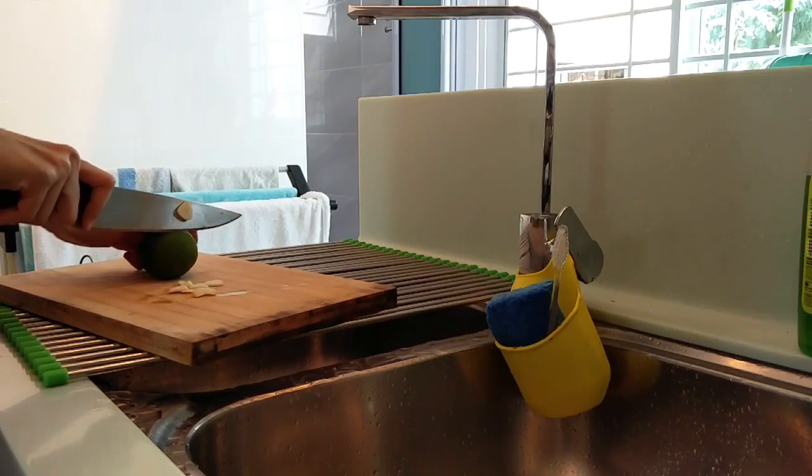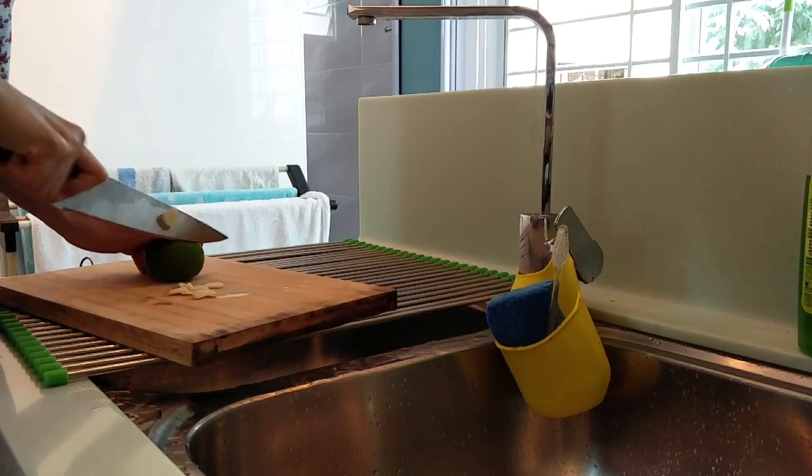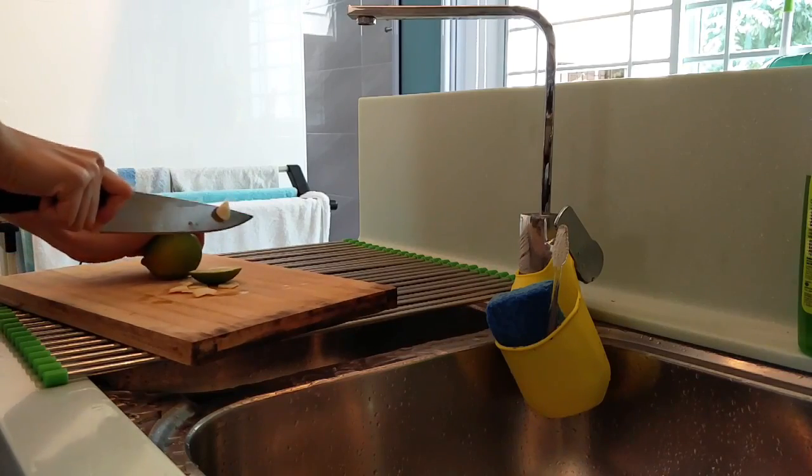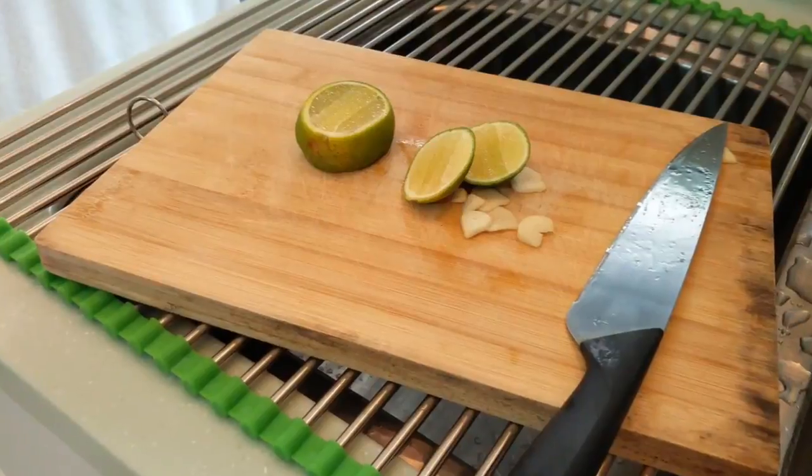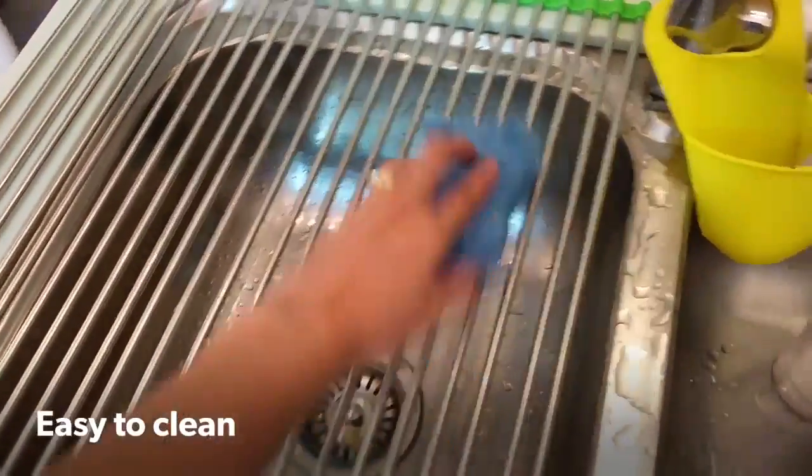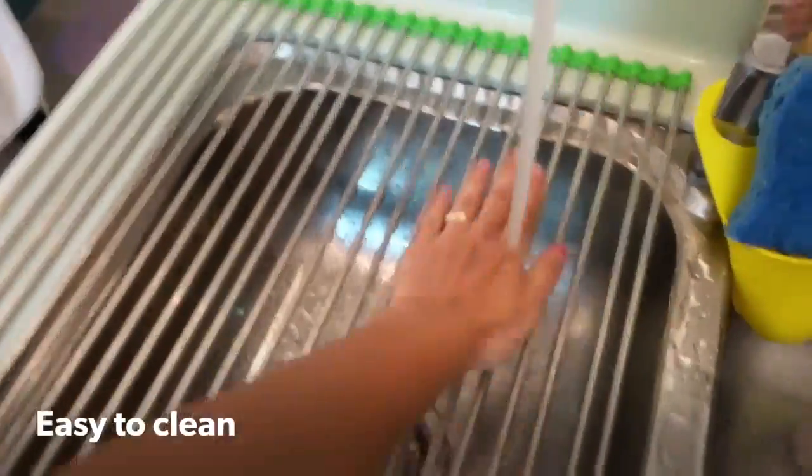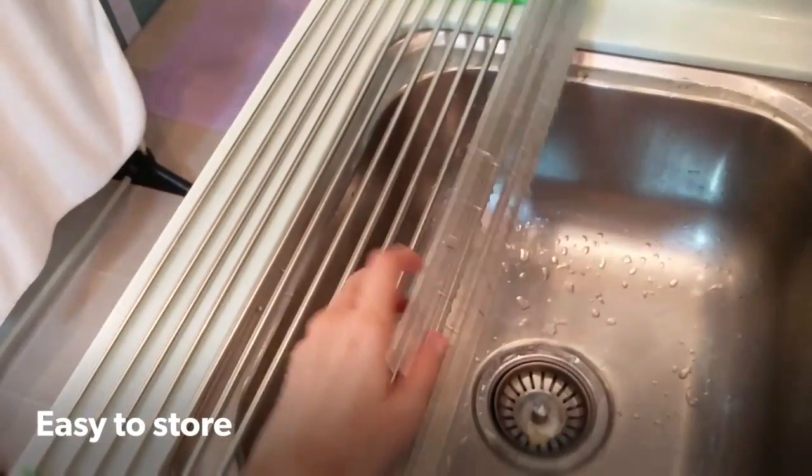I find this dry sink rack very helpful, especially for putting our cutting board safely. We can also use this as a normal dry sink rack. It's easy to clean and easy to store—just simply roll it up.